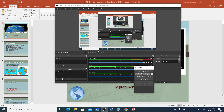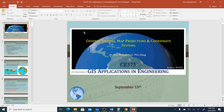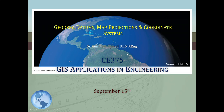Hello everyone and welcome to my GIS course CE 375. Today we're going to start talking about coordinate systems and mapping systems of GIS. We'll cover different things including Geodesy, which is surveying, datums which are reference systems we use for coordinates, and in the last video we'll talk about map projections and coordinate systems throughout this chapter. I'd ask you to read chapter 2 in our GIS textbook.